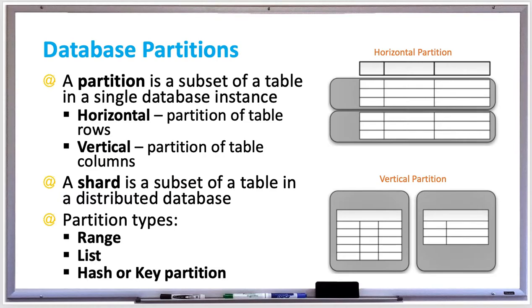A database partition is a small piece or subset of a database table. Database tables can have lots of partitions which don't overlap and make up all the table data. There are two types of partitions: horizontal partition, which is a subset of table rows, and vertical partition, which is a subset of table columns.